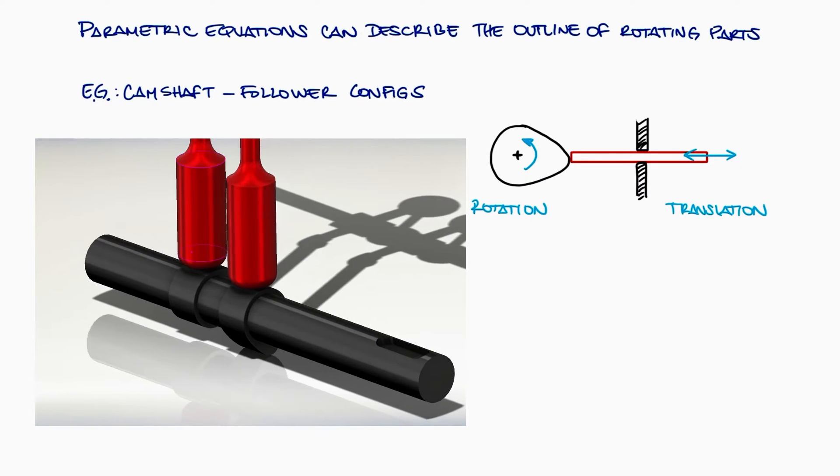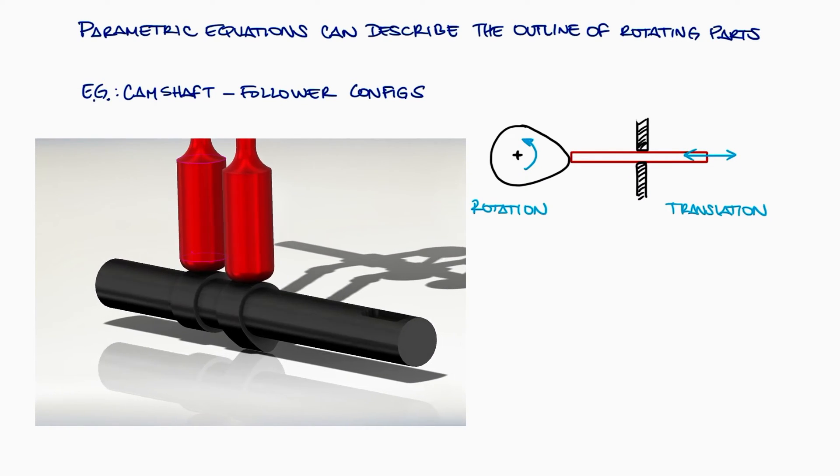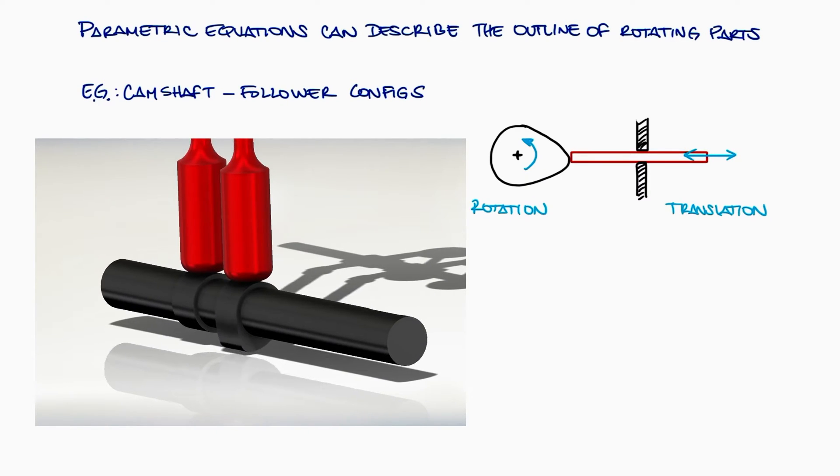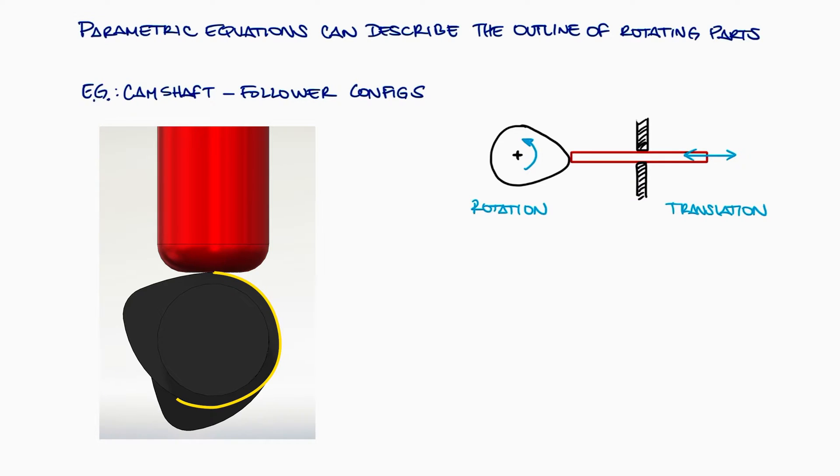For around half a rotation, each red follower is not moving at all, and then, because the radius of the cam is larger for some angle values, the followers are being pushed upward. In this case, the reason for wanting this type of motion is for the rest of the follower mechanism to keep a valve closed most of the time and then open for a brief period of time every time the shaft rotates.